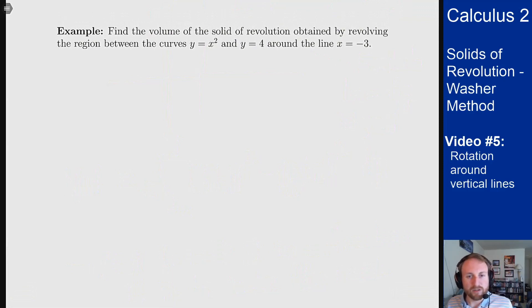Find the volume of the solid revolution obtained by revolving the region between the curves y equals x squared and y equals 4 around the line x equals minus 3. We have a parabola and a line that cuts it off and we're going to revolve this around a vertical line.